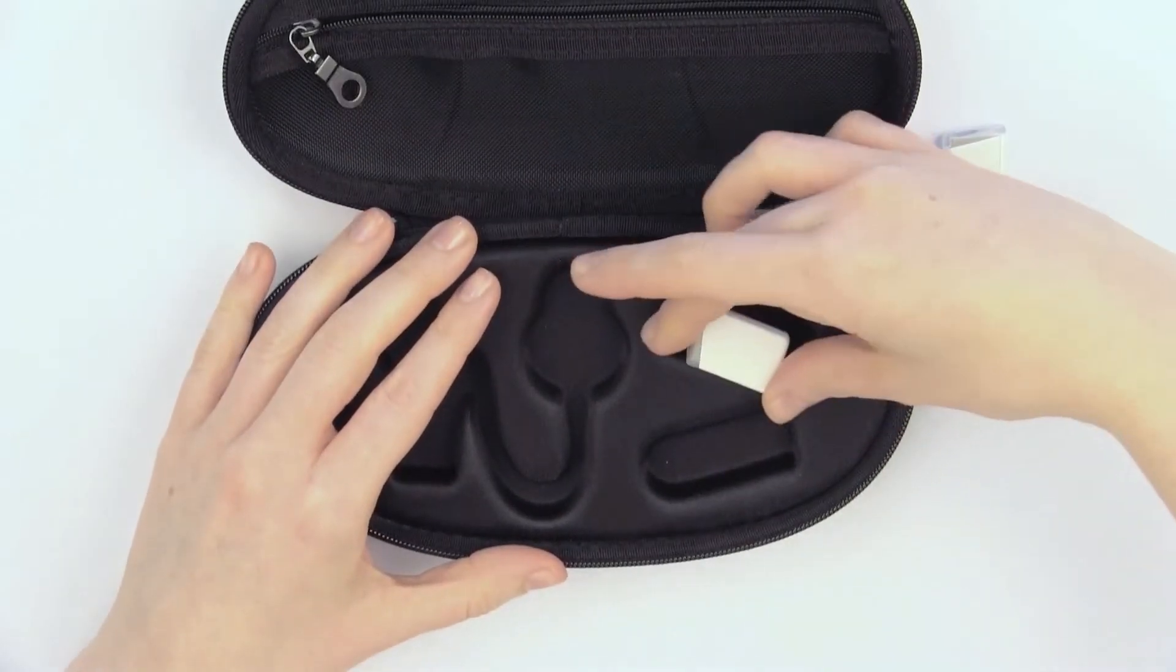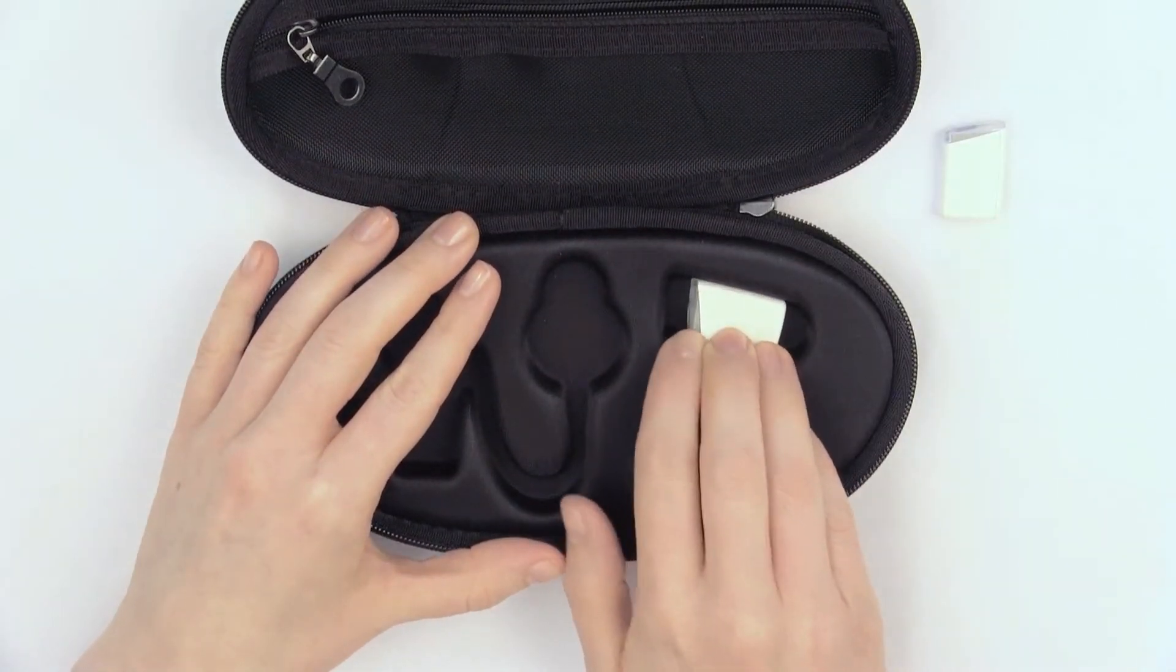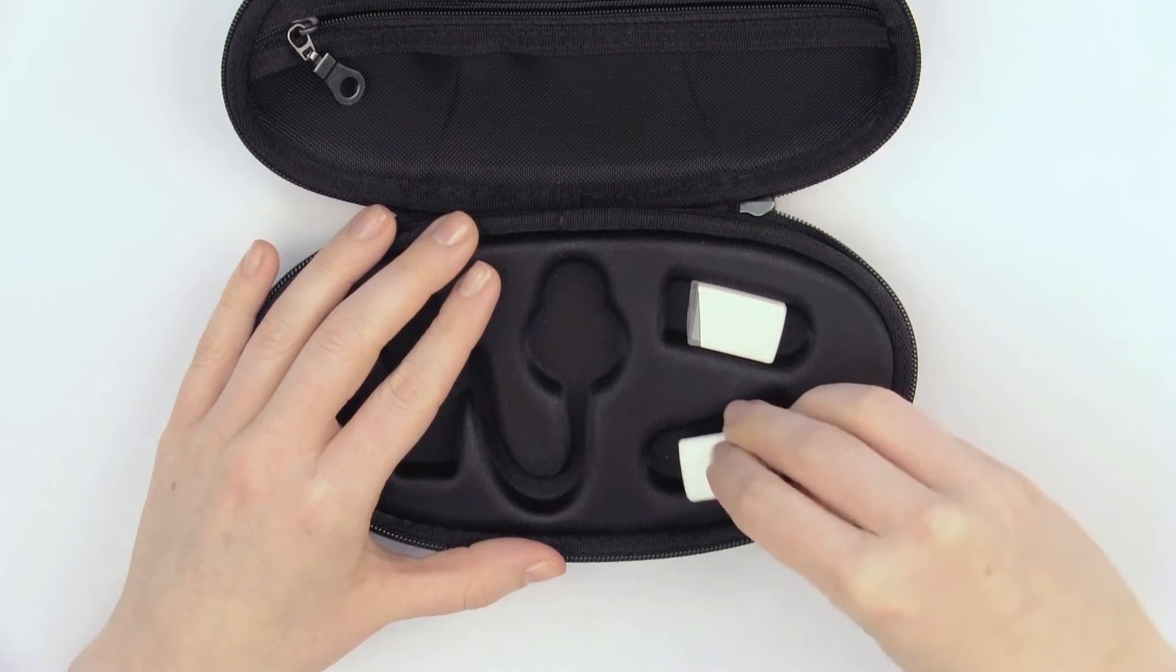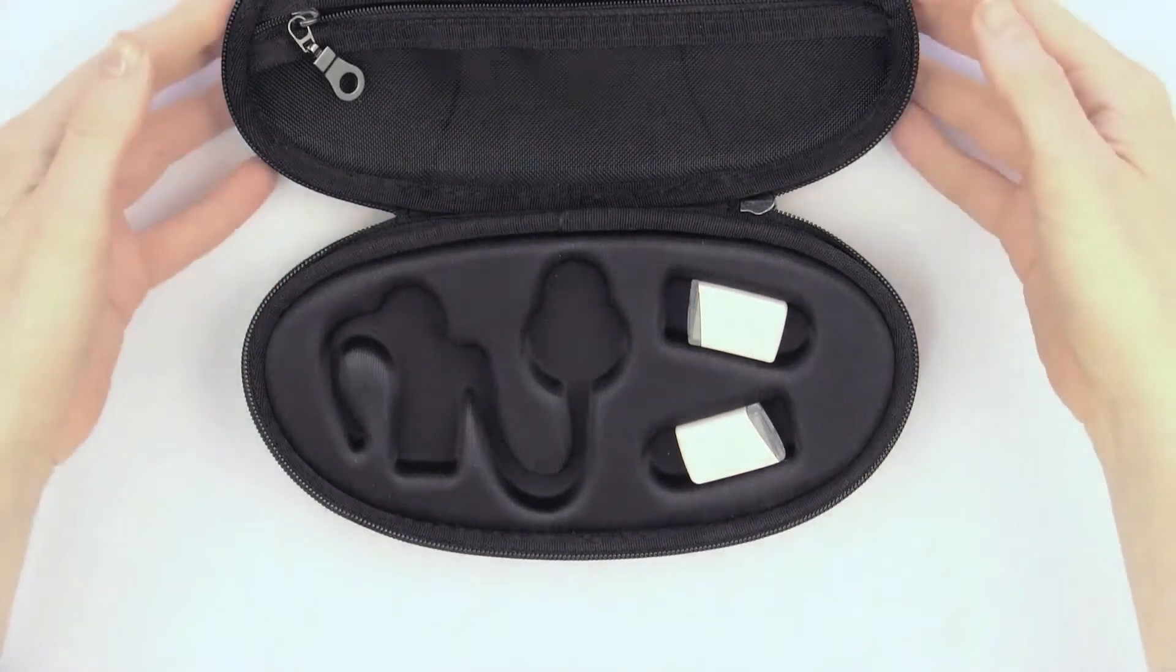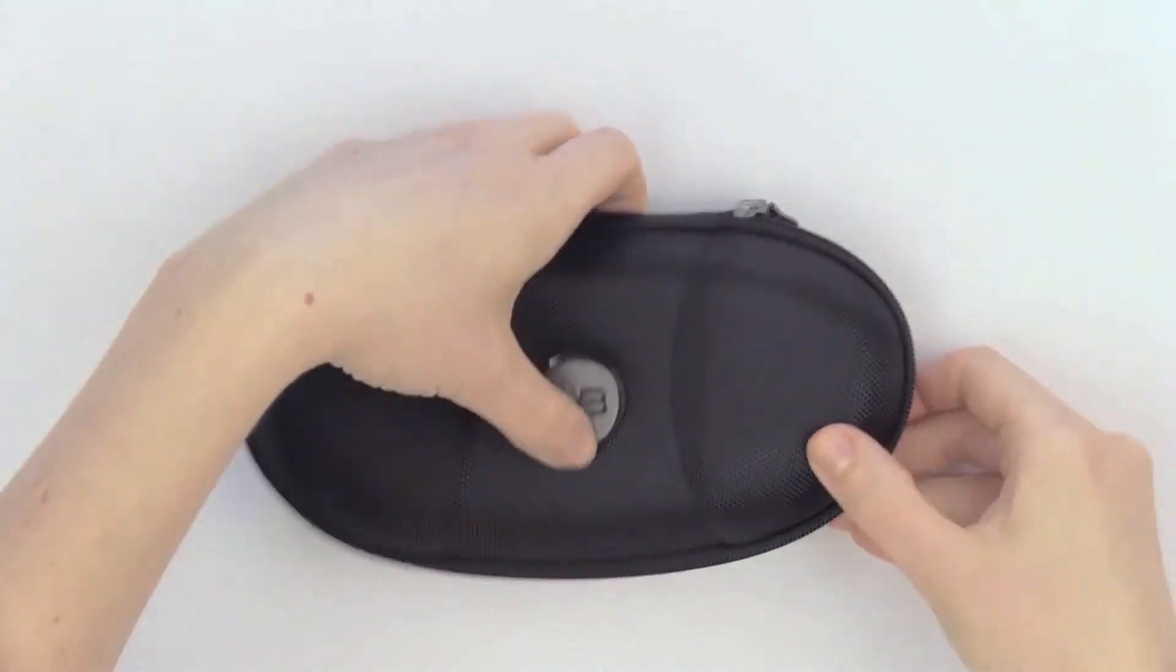Batteries should not be loosely carried in pockets or handbags, as this may cause debris to accumulate on the connector. The carrying case included in the Naida CI kit can also be used for transporting batteries.